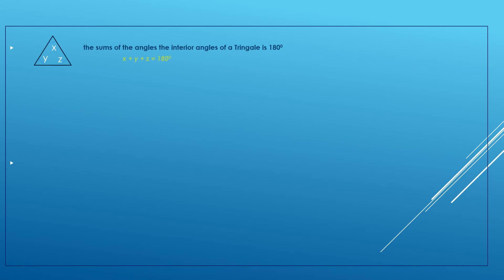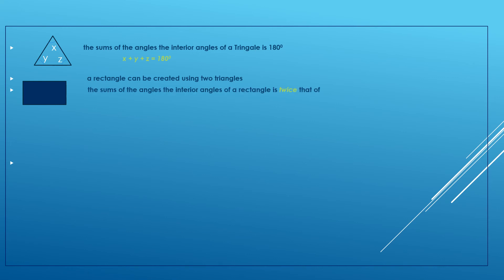So X, Y, and Z are the angles of the triangle. If you look at the rectangle or square, there are two triangles in the middle. If you have an angle on the other side, you can see the triangle on the other side.